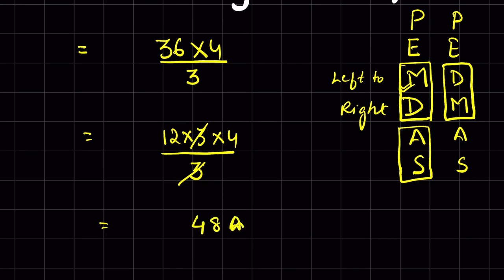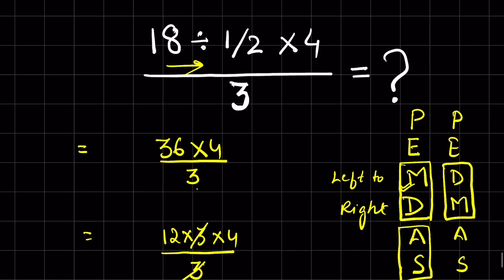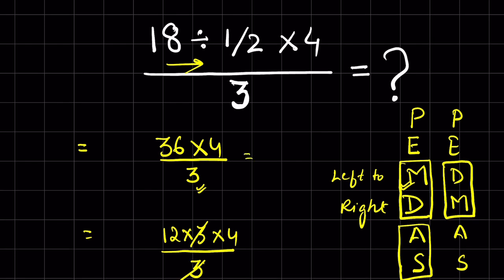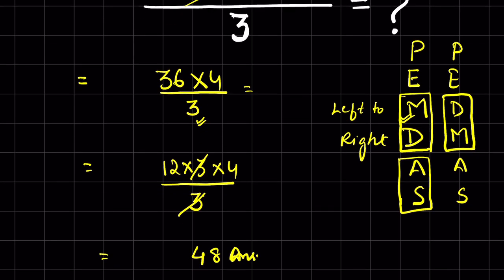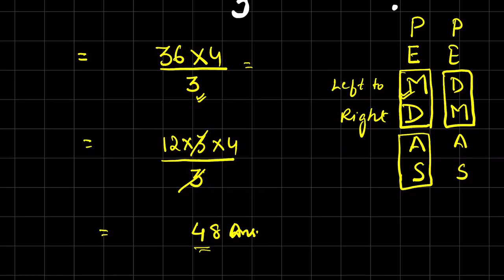If there was no number in the denominator, then the answer would have been simply 36 multiplied by 4. But there is a number in the denominator, that is why we are not multiplying it by 4, so that we have a smaller number to find the factors, cancel it out, and get the answer quickly.